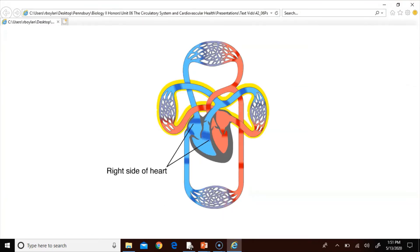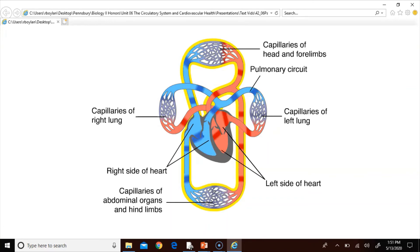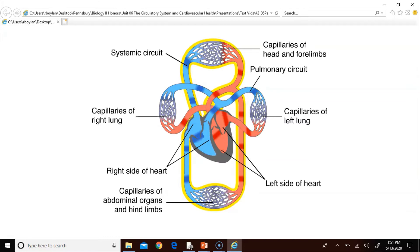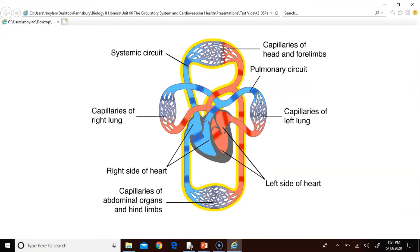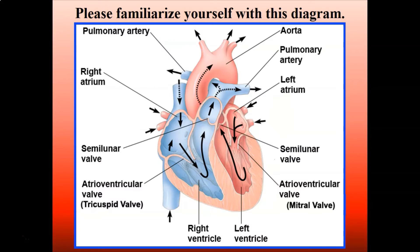In mammals, blood pumped by the right side of the heart passes through the lungs and enters the left side — this is the pulmonary circuit. Blood pumped by the left side is distributed to the other body organs and returns to the right side — this is the systemic circuit. This pattern, called double circulation, ensures vigorous blood flow to the organs because the heart pumps blood a second time after it returns from the lungs.